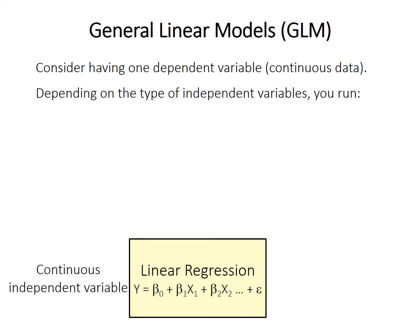First, let's take a step back and talk about something called general linear models. You've actually learned about several of these, despite the fact that I haven't used this term before. Consider having a single continuous dependent variable. If the independent variables are also continuous, this is called linear regression. This equation allows multiple independent variables: x1, x2, and so forth.